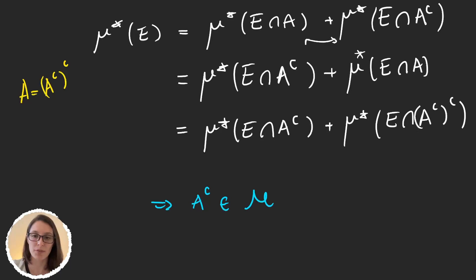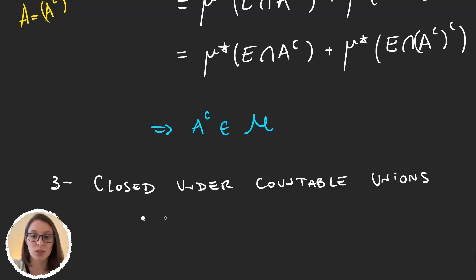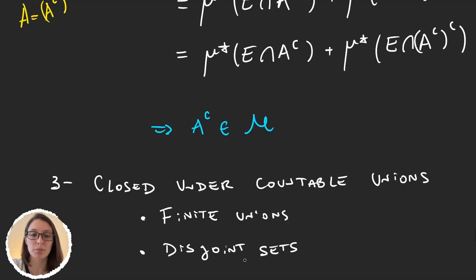So we have two out of the three steps necessary to prove that M is a sigma-algebra. The third step would be to prove that M is closed under countable unions, and we will do this in two steps. First we will prove that it is closed under finite unions, and second we will prove that it is closed under countable unions of disjoint sets. These two conditions will be enough to ensure that M is closed under countable unions, and so with these three properties we will have that M is a sigma-algebra.